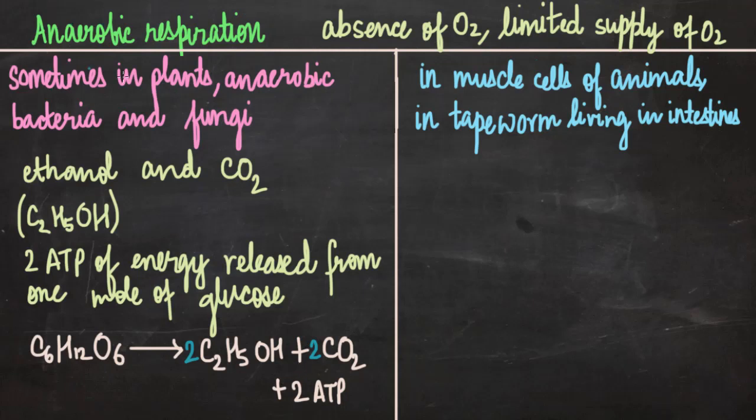Another case for anaerobic respiration is in muscle cells of animals or even in organisms like tapeworm which live inside the intestines of various animals. When does it take place in muscle cells? Suppose you have gone for trekking on a mountain. So slowly as you go up your breathing rate increases and various cells of the body they have less of oxygen and more of carbon dioxide. So at that point those cells start respiring anaerobically.